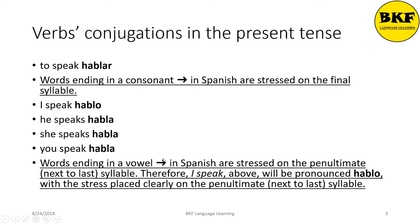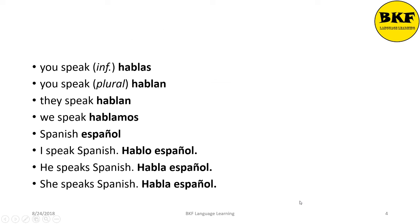Words ending in a vowel in Spanish are stressed on the penultimate syllable — meaning the next-to-last syllable. So 'I speak' is pronounced hablo with the stress clearly on the penultimate syllable. 'You speak' informal is hablas, 'you speak' plural is hablan, 'they speak' is also hablan, and 'we speak' is hablamos.